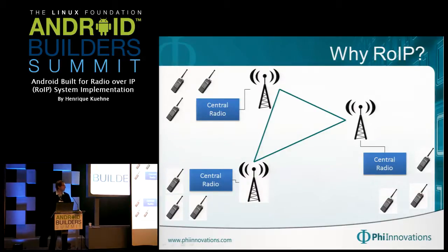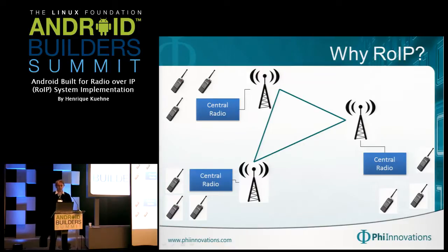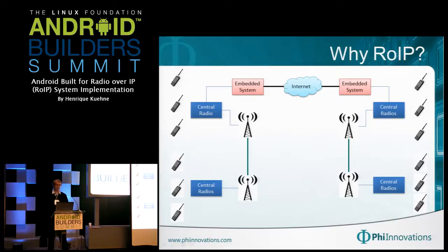Why Radio over IP? This is the typical scenario for a two-way radio system deployment. We have to create a radio infrastructure and it is necessary to deploy stations and cables to cover the largest region possible. To do this, equipment is used to treat the radio signal and amplify it to reach the coverage area radius.